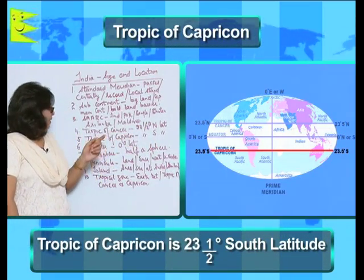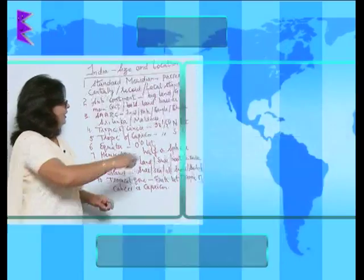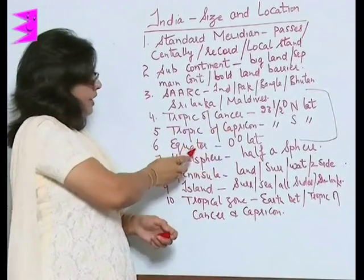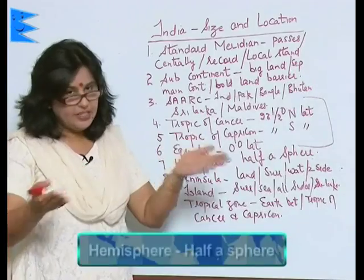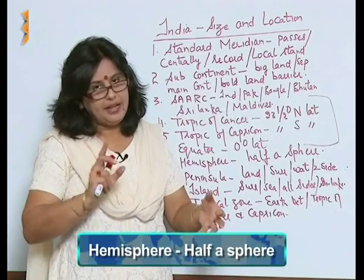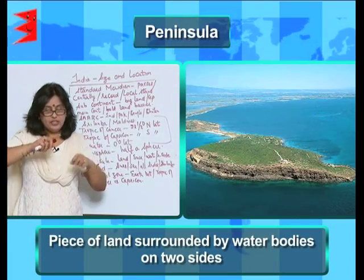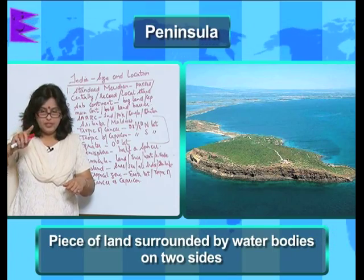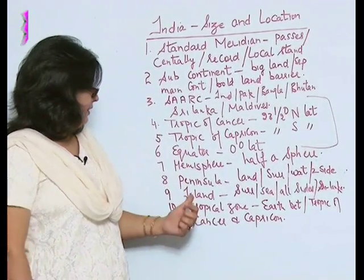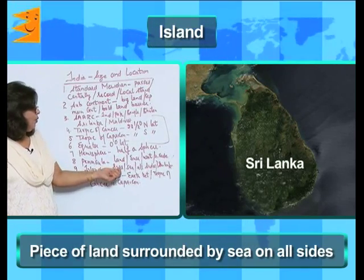The Equator is 0 degree latitude. Remember, these three are the important latitudes: Cancer, Capricorn, and the Equator. Hemisphere — 'hemi' means half, so half a sphere is a hemisphere. Peninsula is that piece of land which is surrounded by water bodies on two sides.